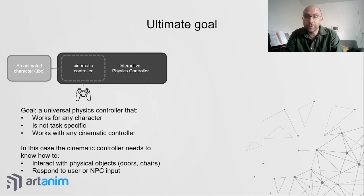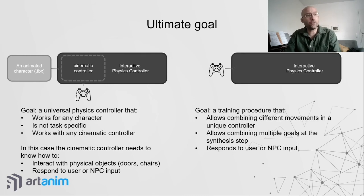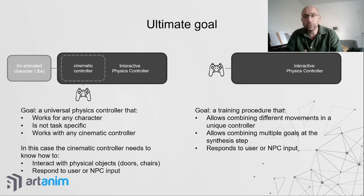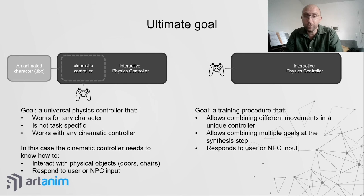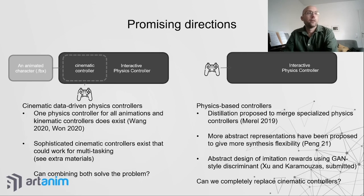For the purely physics controller approach, the goal is a training procedure that allows combining different movements into a unique controller and combining multiple goals. For example, having a character sit down while shooting — that is really difficult or not yet possible with a purely physics-based controller today.